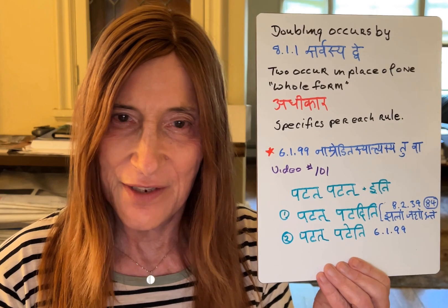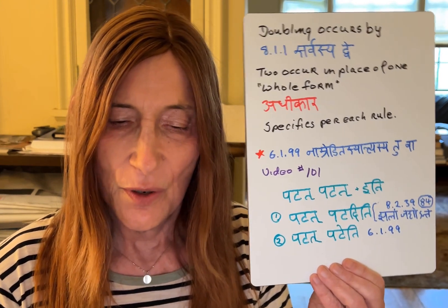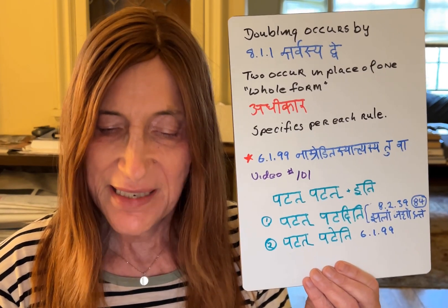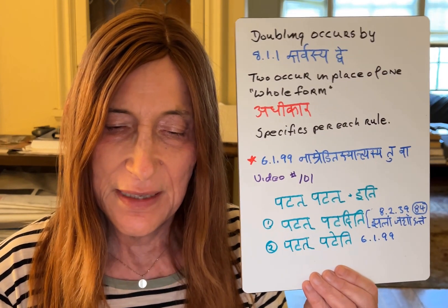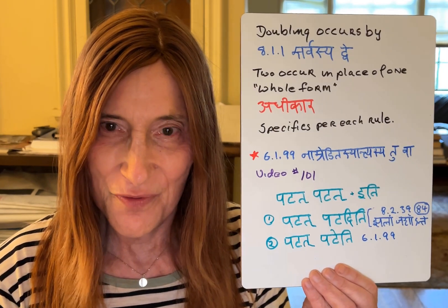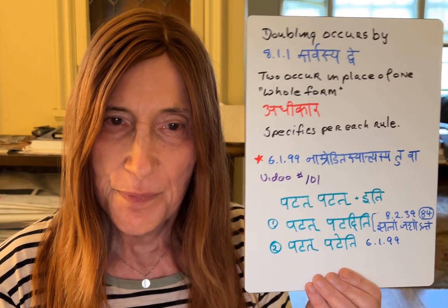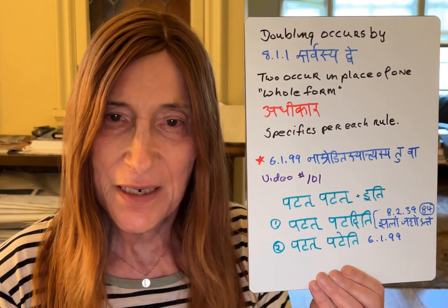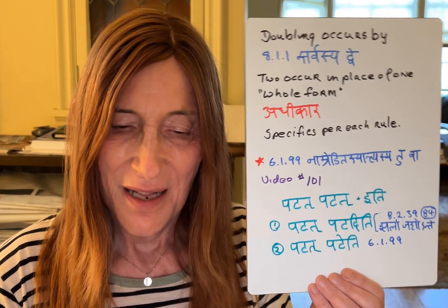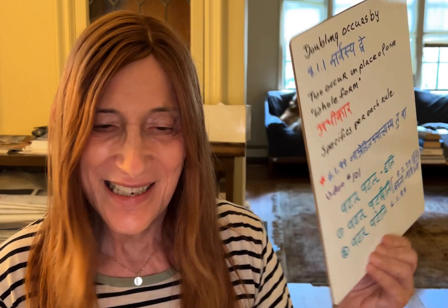Sutra 8.2.39, or 8/4 in Siddhanta Kaumudi, 'chalam jashanta,' changes the 't' of 'patat' to 'd.' So we get 'patat padeti.' Then with sutra 6.1.99, 'na amredita syantya sya tuva,' we have the option of the 'e' of 'eti' being a pararupa replacement of only the final 't,' giving us 'patat patati' with guna. Those are the two valid forms — that's the context for our term 'amredita.'